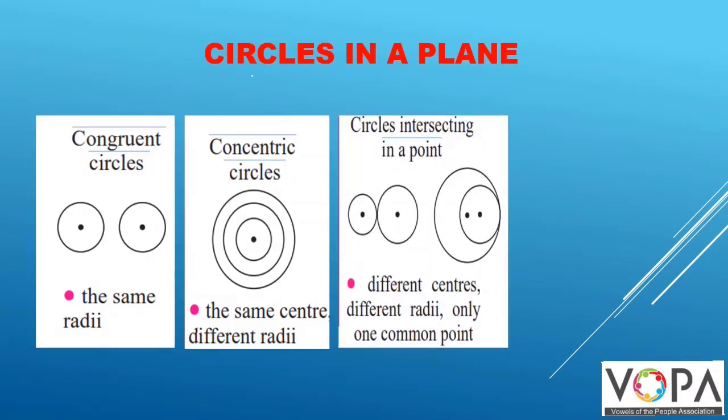Circles intersecting in a point. These are also called touching circles. They touch each other at a common point. These two circles are touching externally whereas these two circles are touching internally.